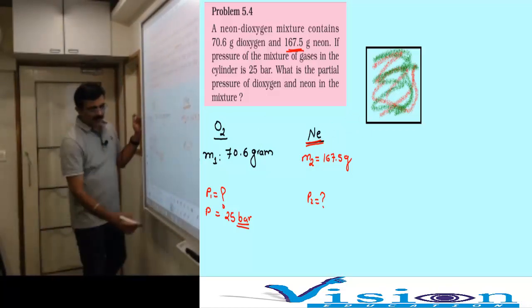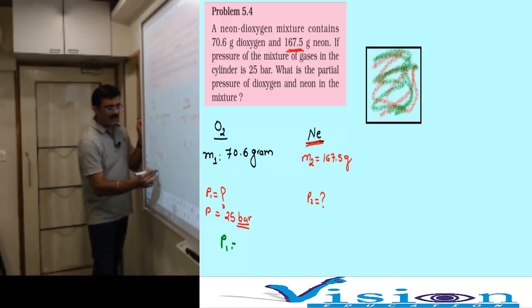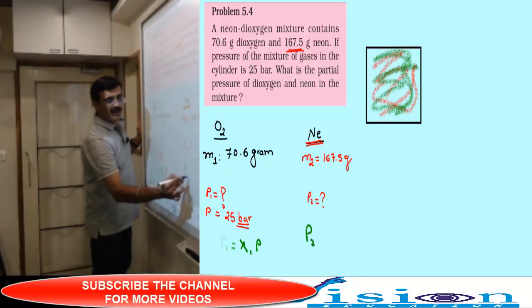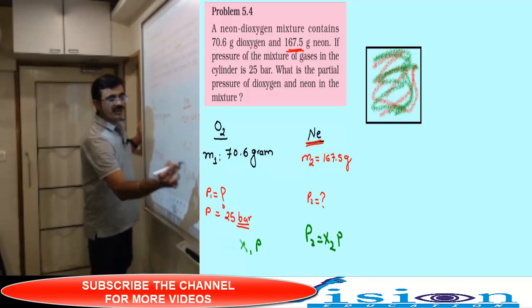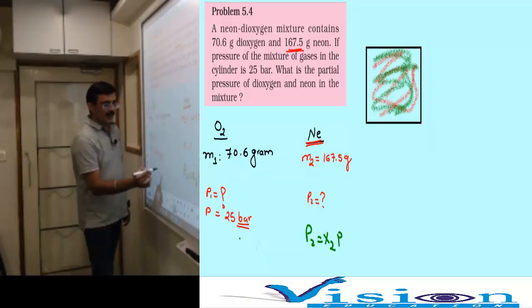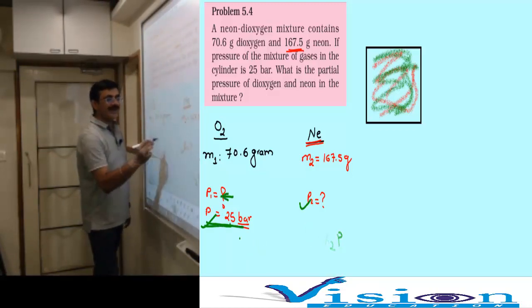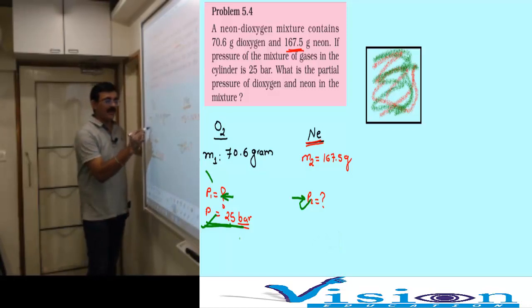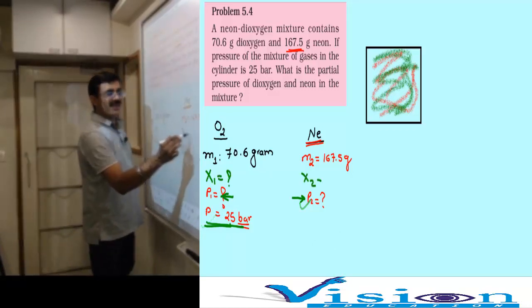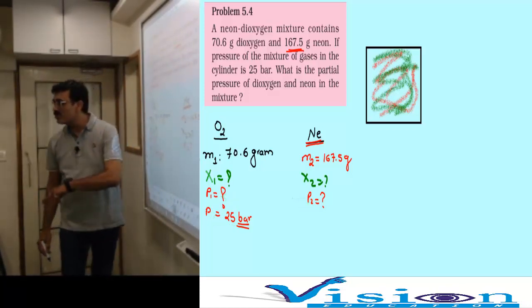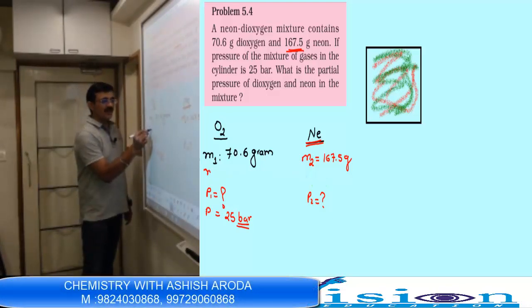We have to find p1 and p2. This is Dalton's law application. For p1, the formula is mole fraction x1 into p total. For p2, the formula is mole fraction x2 into p total. So first we need to find x1 and x2.